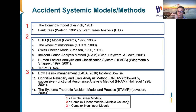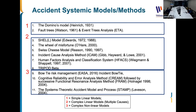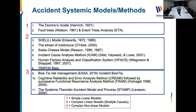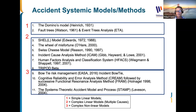These models and methods are classically classified into three generations, because this is something that has been improved over time. The first generation is the simple linear model — we have two models here: the domino model and the fault tree model. Then we have what we call the complex linear model, where the main change is the concept of multiple causes — we assume that accidents do not occur because of one cause but because of interactions between several causes.